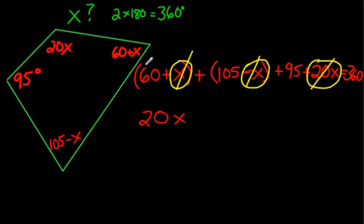Now, let's look at the other like terms. Well, here's a regular old number 60, a regular old 105, and a 95. 60 plus 105 is 165. Okay, 165 plus 95, let's see, that's 165.